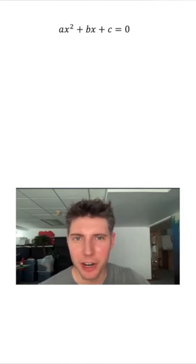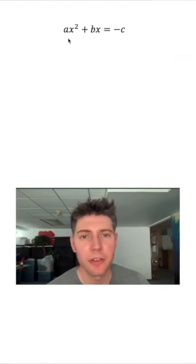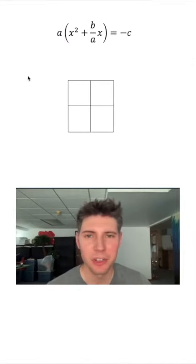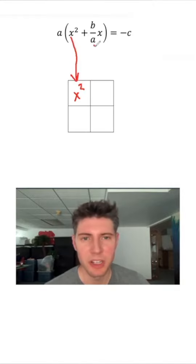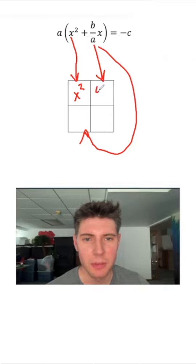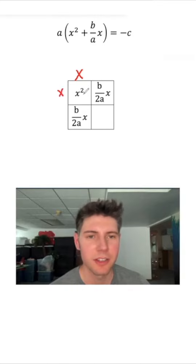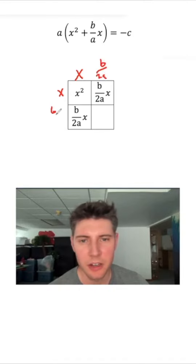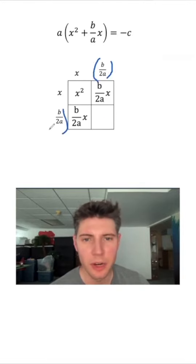A lot of people have asked about deriving the quadratic formula — how does this become this? We subtract c from both sides, then factor an a out of everything on the left side. Next, we imagine a generic rectangle, putting the stuff on the inside. The x squared goes here, then this b over ax we split between two boxes — each of them is b over 2ax. Defining the outside: these two would be x because x times x is x squared. And x times what gives us b over 2ax? That's b over 2a. The missing piece inside is b over 2a times b over 2a, which is just (b over 2a) squared.